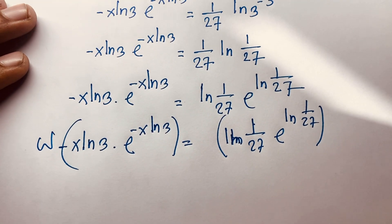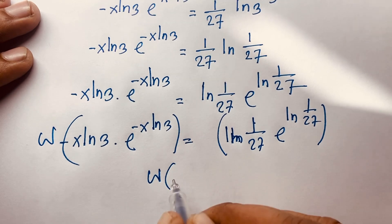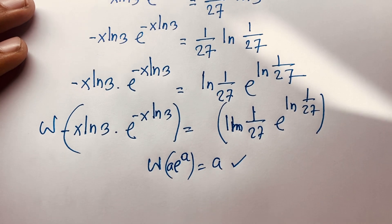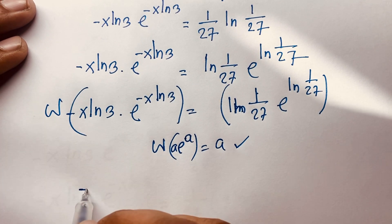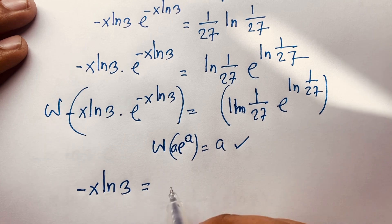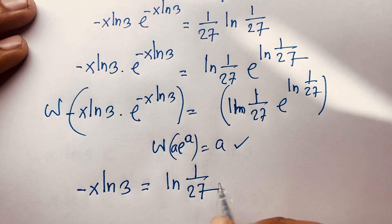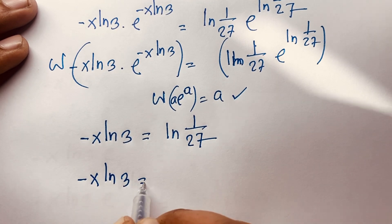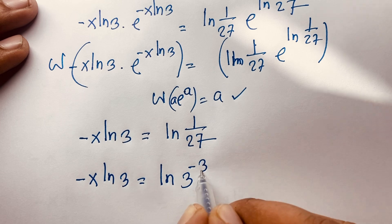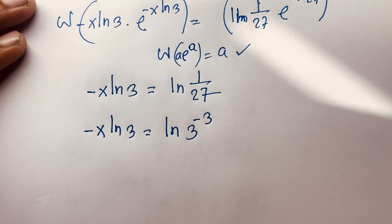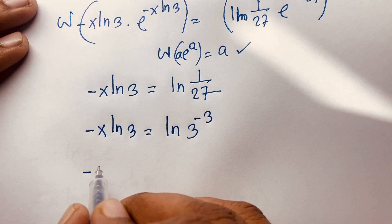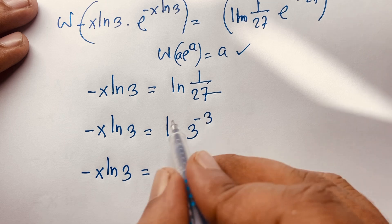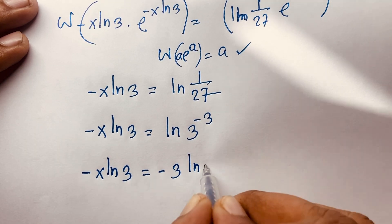Now I apply the Lambert W function to both sides. We know that W of A times e to the power A equals A. Applying this law, we get: negative x ln 3 is equal to ln 1 over 27. And ln 1 over 27 equals ln 3 to the power minus 3, which equals negative 3 ln 3.